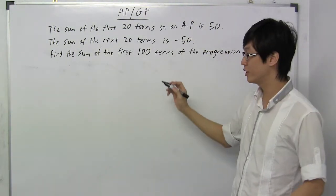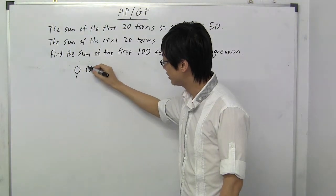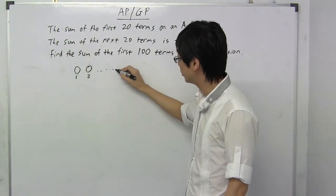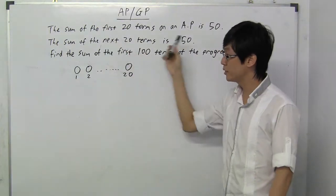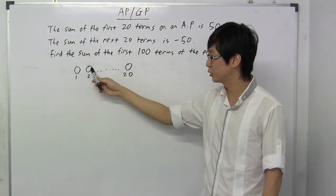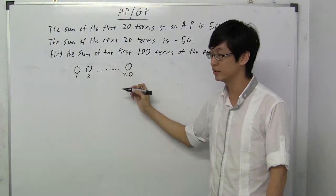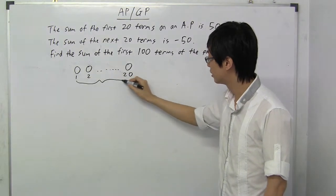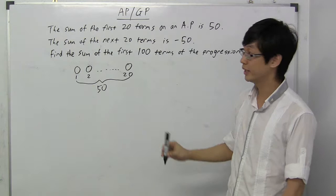So let's draw it out. We have the first term, second term, all the way to the 20th term. The first statement is saying that I add the first term to the second term to the third term all the way to the 20th term, add up together, my sum is 50.